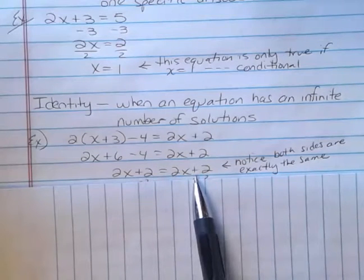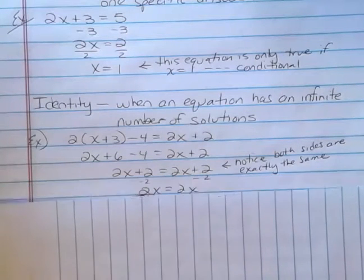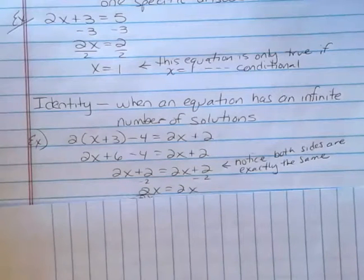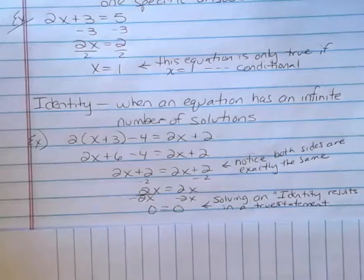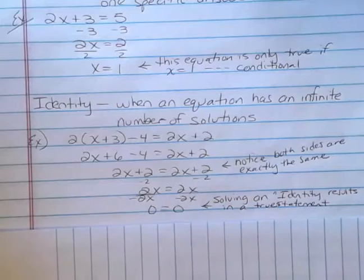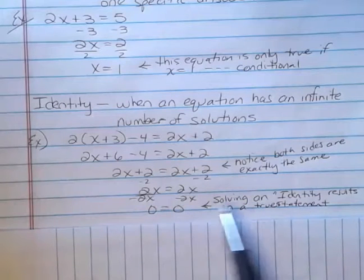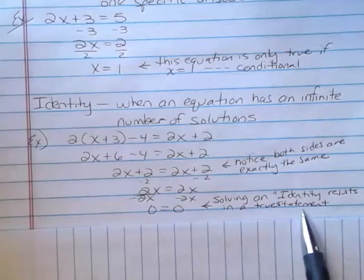Notice that both sides are exactly the same here. That means I'm going to have an identity, because if I go ahead and subtract 2 from both sides, I'm left with 2x equals 2x. And if I subtract 2x from both sides, I get 0 equals 0. My variables drop out, and I'm left with a true statement. Solving an identity results in a true statement.